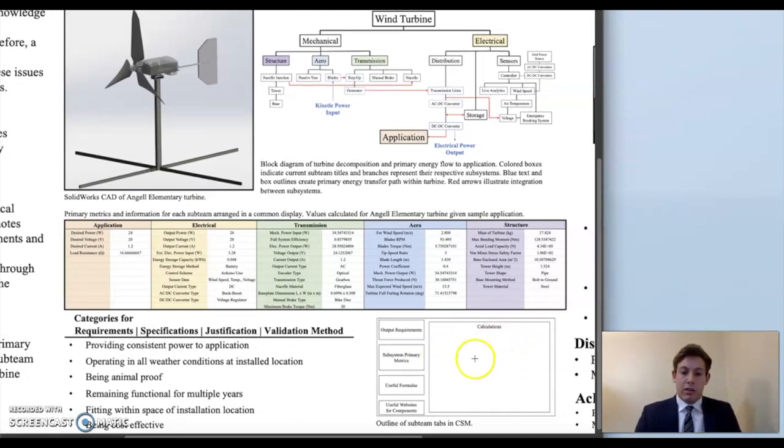The tab has a large amount of calculations for each sub-team here, which produced the subsystem primary metrics shown here. I would say in general about 85 to 90% of these calculations were done by me from the ground up. There was a blade element model created by a past member using this blade subsystem or sub-team block, but pretty much everything else was from the ground up.